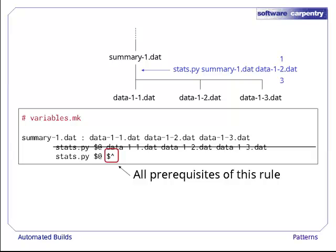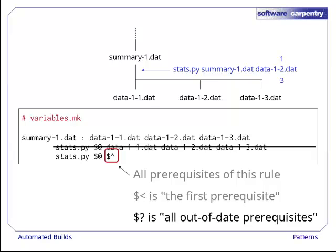There are other automatic variables as well. For example, $< means the first prerequisite in the list, and $? means all prerequisites that are out of date. Don't worry if you can't remember them. Everyone except the most passionate make user writes them on a sticky note and puts it on their terminal.